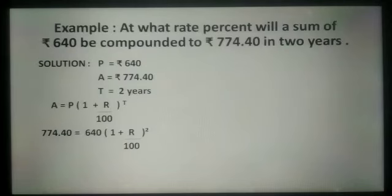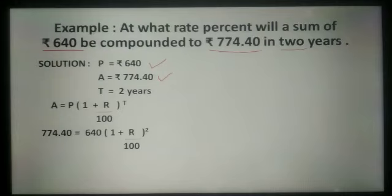Now, in this next example: at what rate percent will a sum of Rs. 640 be compounded to Rs. 774.40 in 2 years? Here, principal is Rs. 640, amount is Rs. 774.40, time is 2 years.